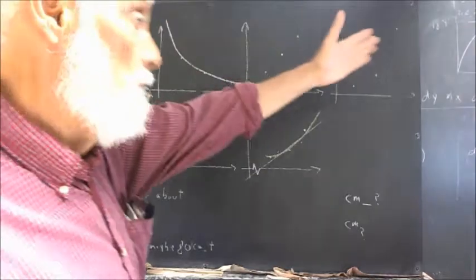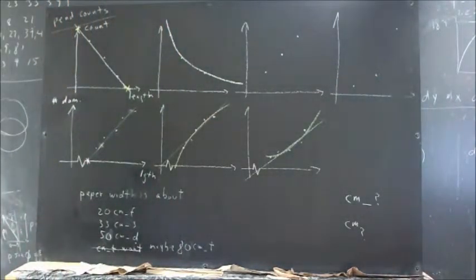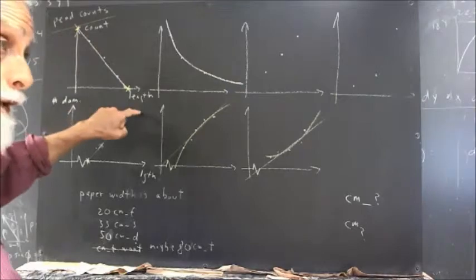Now, of these four graphs, you were asked to determine which graph or graphs could not possibly represent reasonable data for the count versus the length.